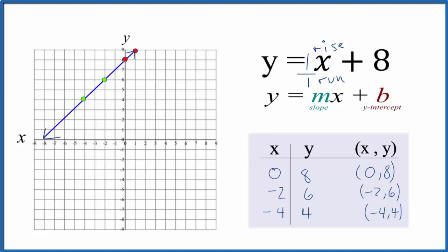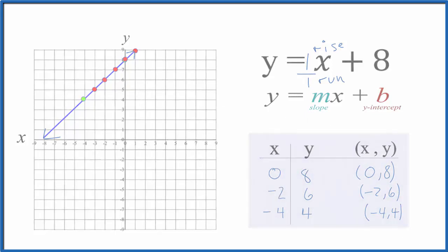We're a bit out of space, so let's go back to the y-intercept and go down 1 and over 1 in the opposite direction. Down 1, over 1, down 1 — you can keep doing this, and you can see all these points line up on our line for y equals x plus 8. So we did the first part correctly. This is Dr. B with the graph for the linear equation y equals x plus 8. Thanks for watching.